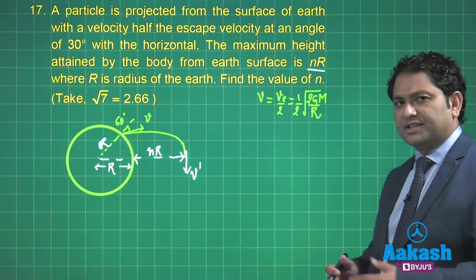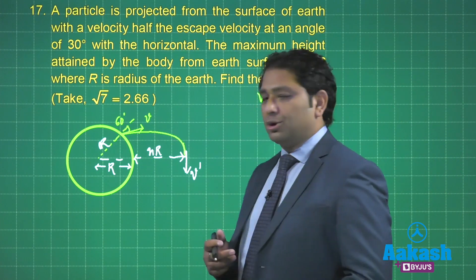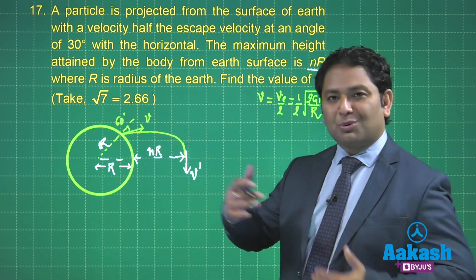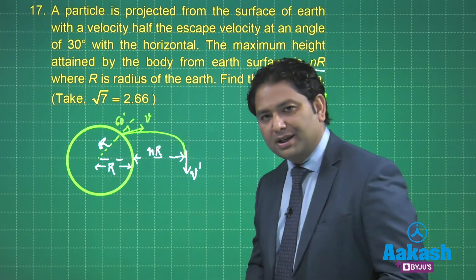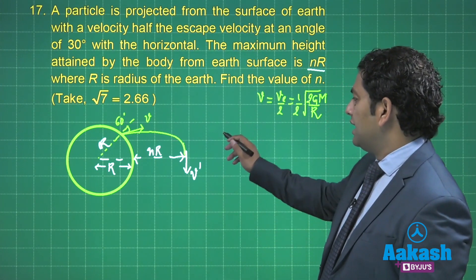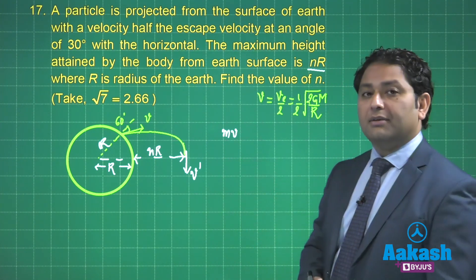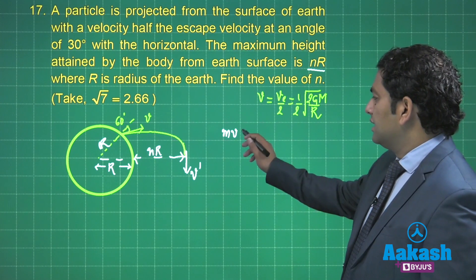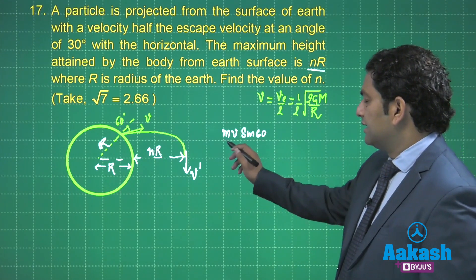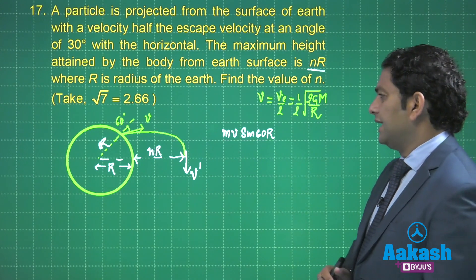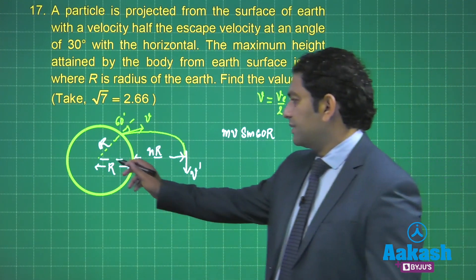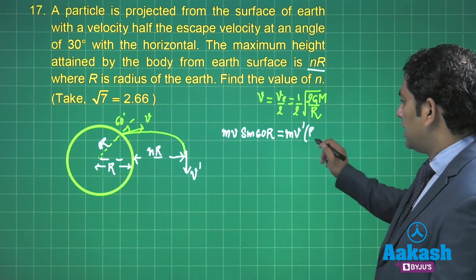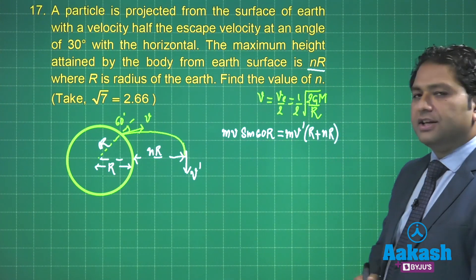Now how do we do it? Obviously the motion is not going to be parabolic because it's a large range. So we do it by angular momentum conservation. So what's the initial angular momentum with respect to center? Because it's conserved only about the center, and no other point. So m·v·sin 60°, right, radius R is the initial angular momentum with respect to this. And how about the final? So m·v'·(R + nR). So that's the initial angular momentum.